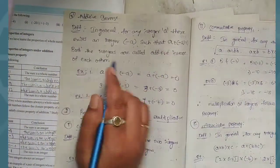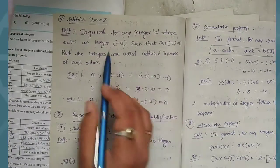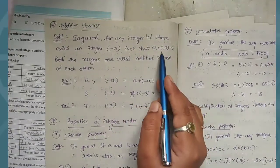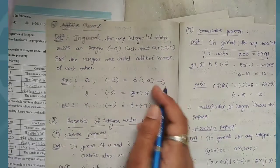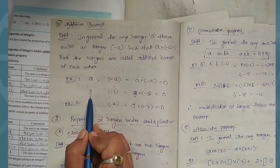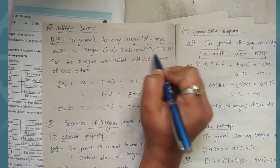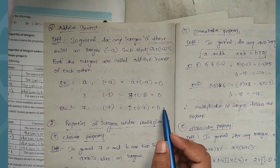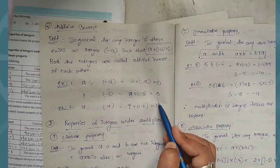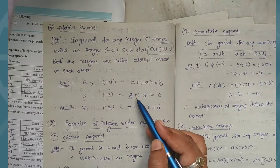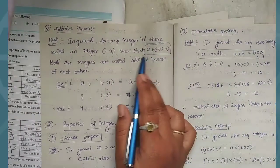Next, additive inverse. In general, for any integer a, there exists an integer minus a such that a plus (minus a) equals 0. For example, if we have integer 3, the inverse is minus 3. So 3 plus (minus 3) equals 0. This condition is satisfied — a plus (minus a) equals 0.